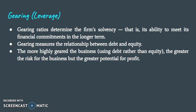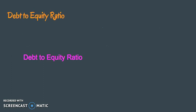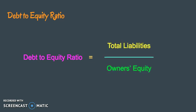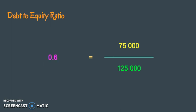So let's have a look at some ratios. The debt to equity ratio equals total liabilities over owner's equity. Let's substitute some numbers: if total liabilities is $75,000 and owner's equity is $125,000, then you get a 0.6 to 1 debt to equity ratio.